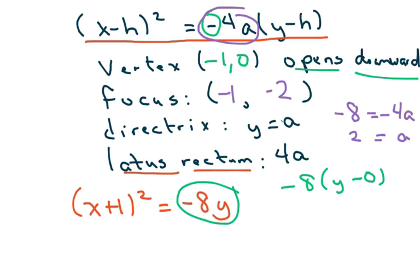And my directrix is just going to be y equals 2. And my latus rectum is just this 4a. So my latus rectum is 8, not negative 8, it's just 8. You don't put the negative in because it's a length.